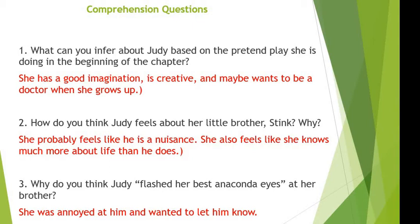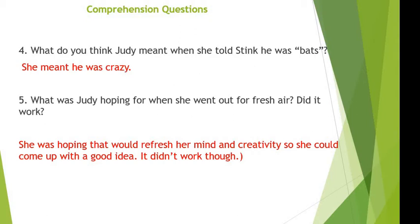What can you infer about Judy based on the pretend play she is doing in the beginning of the chapter? She has a good imagination, is creative, and maybe wants to be a doctor when she grows up. How do you think Judy feels about her little brother Sting, and why? She probably feels like he is a nuisance and also feels like she knows much more about life than he does. Why do you think Judy flashed her best anaconda eyes at her brother? She was annoyed at him and wanted to let him know. What do you think Judy meant when she told Sting he was bats? She meant he was crazy. What was Judy hoping for when she went out for fresh air? Did it work? She was hoping it would refresh her mind and creativity so she could come up with a good idea. It didn't work though.